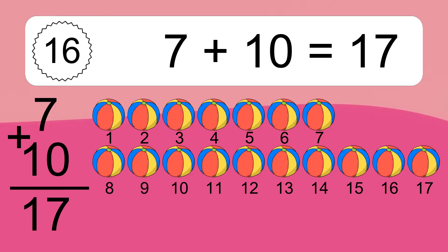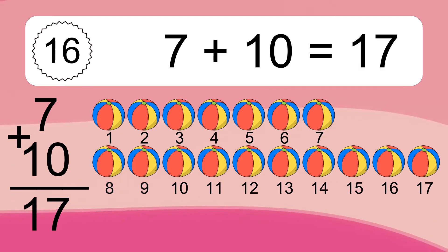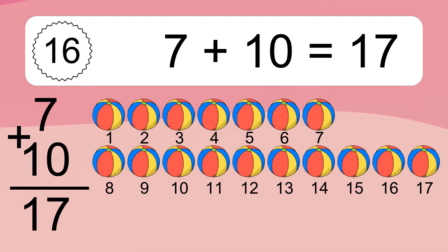9 plus 2 equals 11. Let's count it. 1, 2, 3, 4, 5, 6, 7, 8, 9, 10, 11.